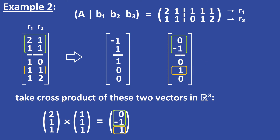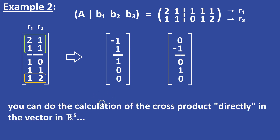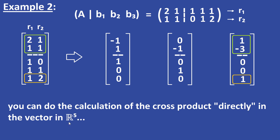Now we pick the next row and take the cross product of these vectors in R3. We do the calculation of the cross product directly in the vector in R5. The entries corresponding to rows 3 and 4 are set to 0 again.